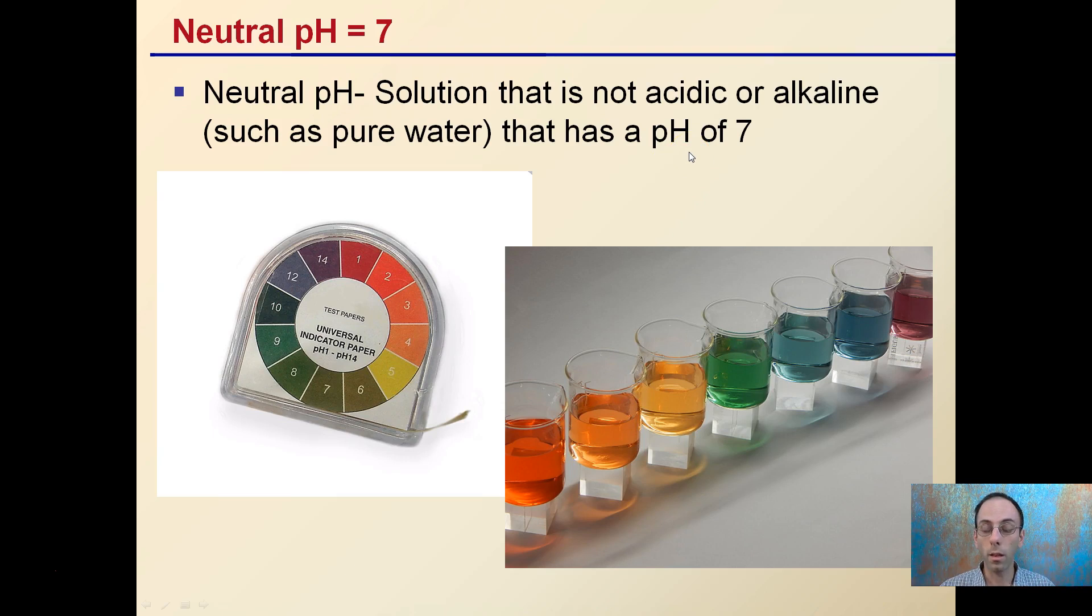pH neutral is 7. This is a solution that is not acidic or alkaline, such as pure water, pure H2O, that has a pH of 7. You can see these universal indicators, colors that they may turn, typically around that green range would be representative of a solution with a neutral pH.